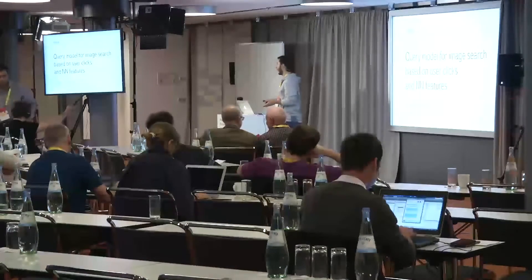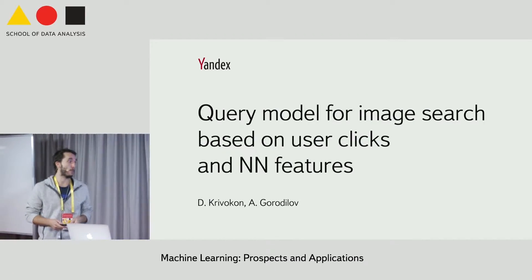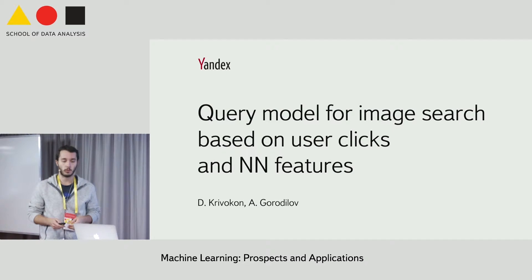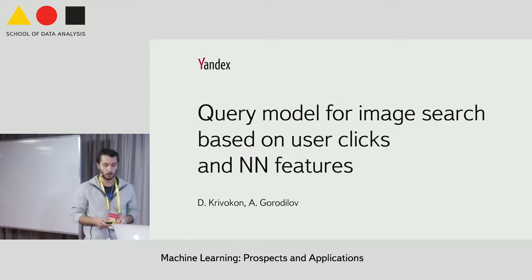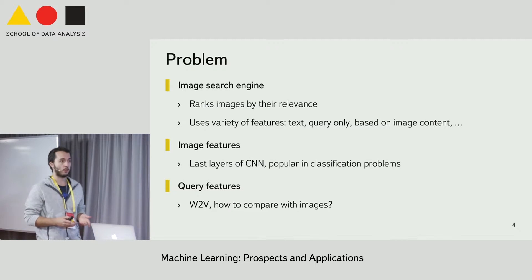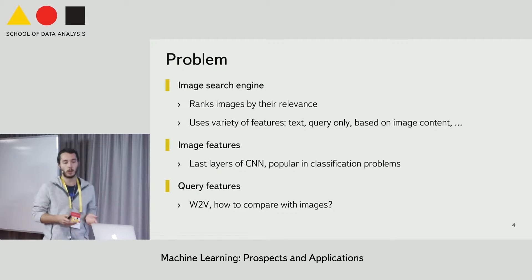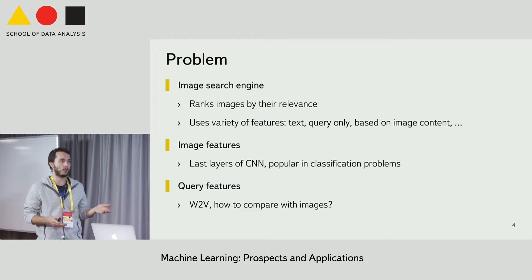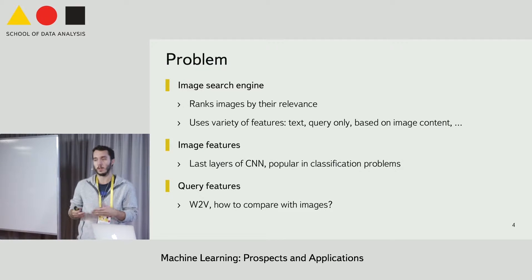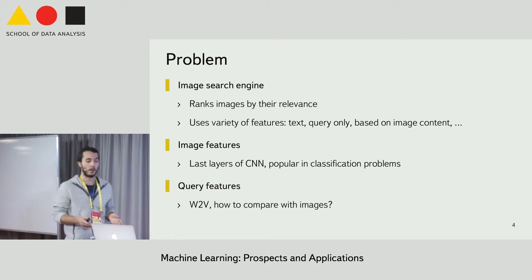Hello, my name is Dmitriy Klivakon and I will be talking about query model for image search based on user clicks and neural network image features. We consider an image search engine whose task is to search for images which are relevant to a text query entered by a user. In contrast to prior work where the input is an image, in our case the input is a text query.